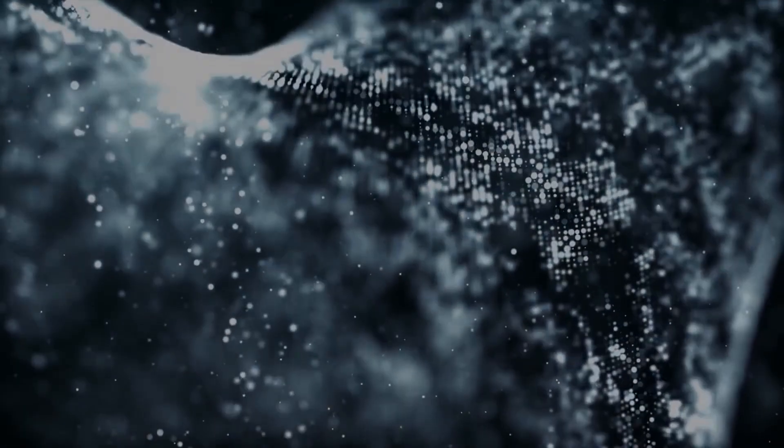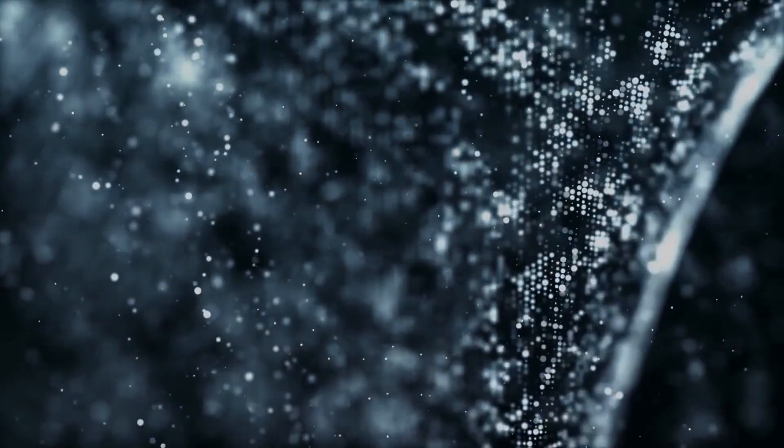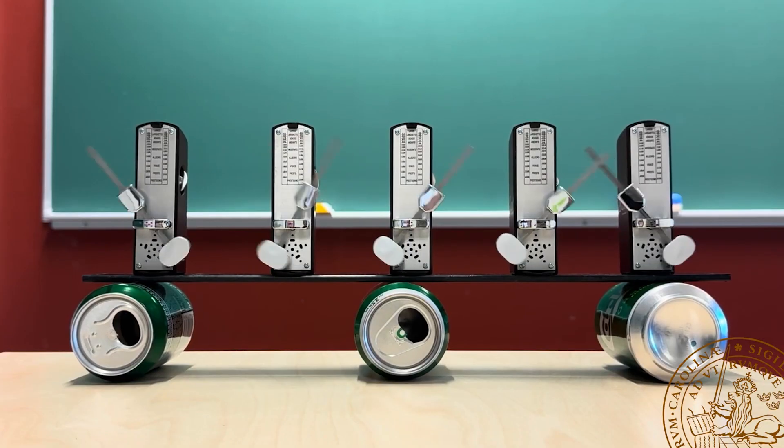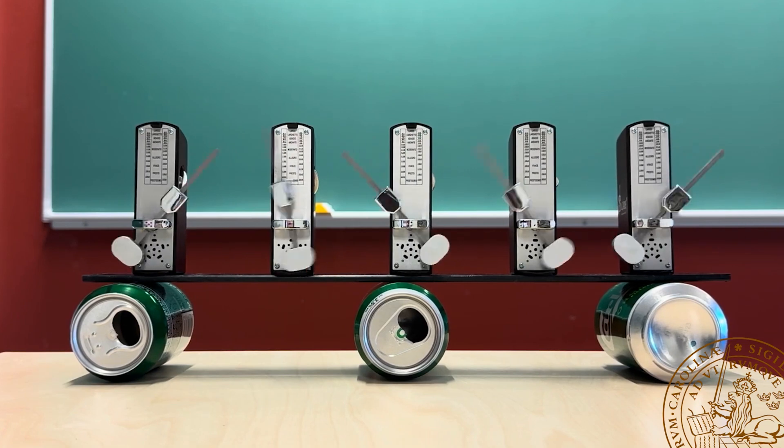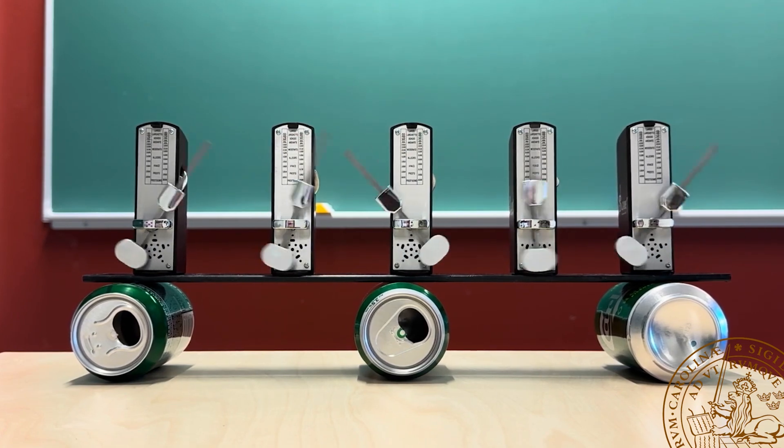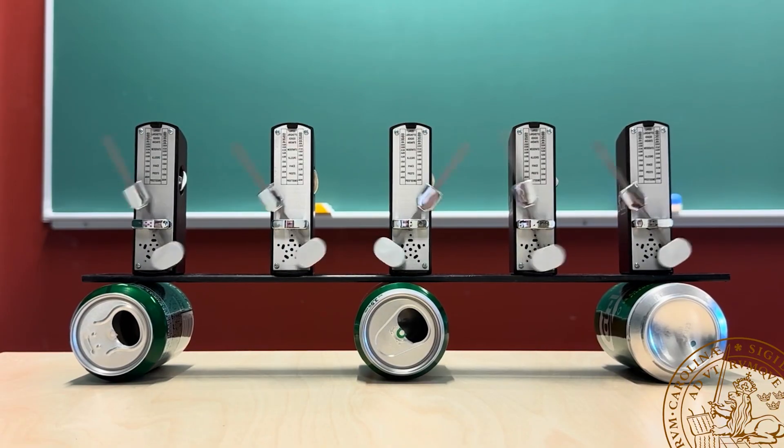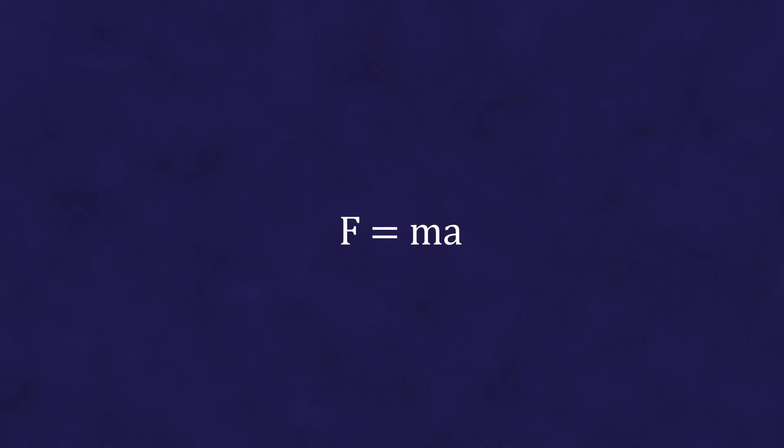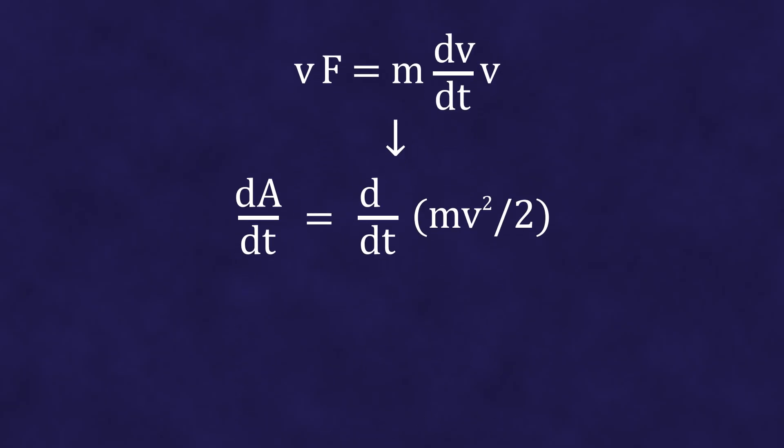Now let's try to understand why it turns out that energy is not conserved. At school, conservation laws such as the law of conservation of energy, momentum, and angular momentum are derived from Newton's second law. It is fairly easy to derive that the change in kinetic energy of a body equals the work done by external forces.